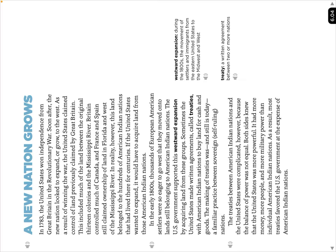If the United States wanted to expand it would have to acquire land from those American Indian nations. The United States wanted to move westward, but the Dakota and Ojibwe already lived there. In the early 1800s, thousands of European American settlers had moved onto land still belonging to American Indian nations — that's trespassing, a major mistake. The United States government supported westward expansion by acquiring land. Sometimes the United States made written agreements called treaties with American Indian nations to buy land for cash and goods.